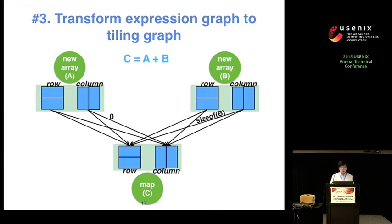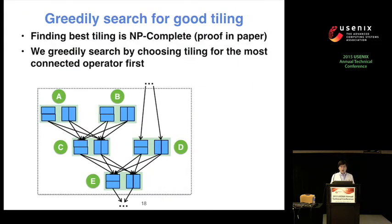In this graph we show the tiling graph of map. For other Spartan high-level operators, they have their own unique graph and edge costs. In a tiling graph, each operator has several possible tiling nodes but only one can be chosen. So our original goal — finding the best tiling for the expression graph — becomes finding the tiling node for each tiling group that minimizes overall communication cost. A naive algorithm enumerates all possible choices, but the number of possible tilings is exponential to the number of operators.